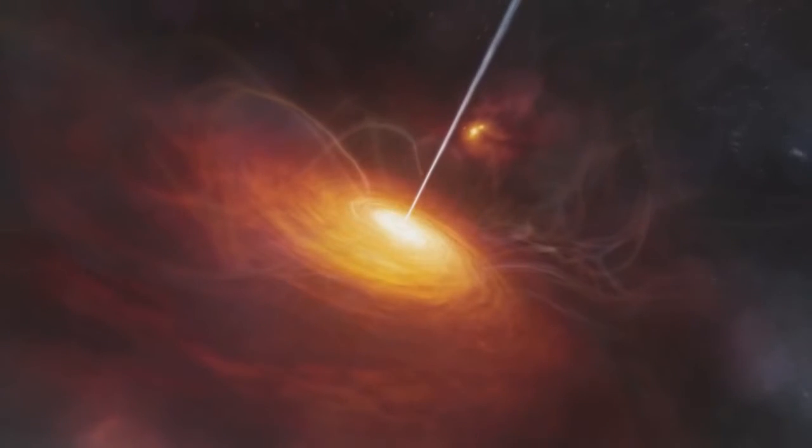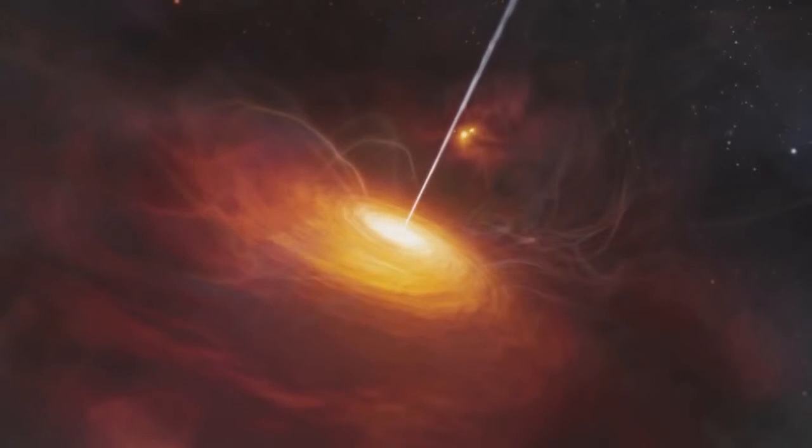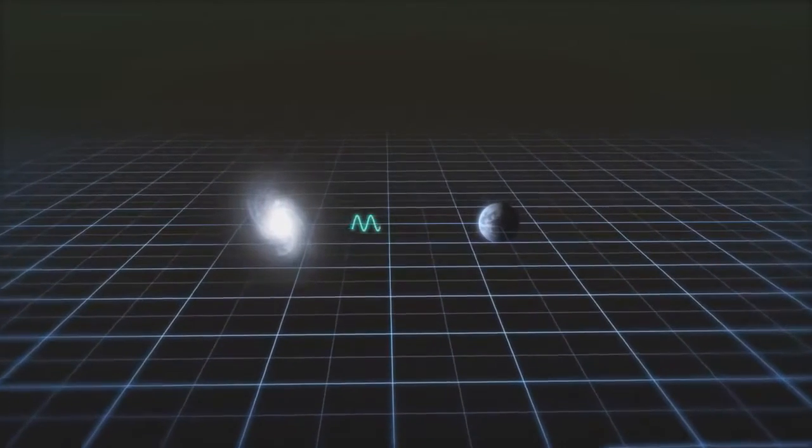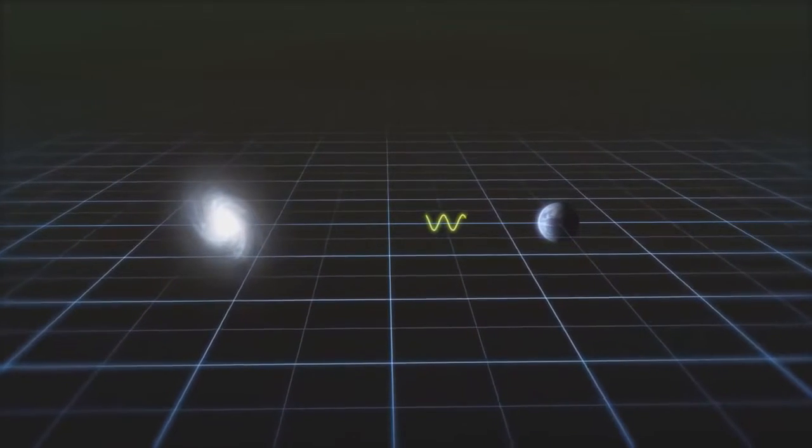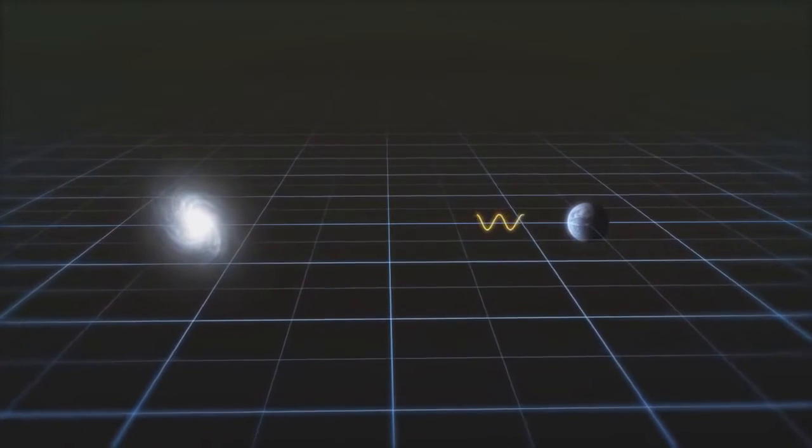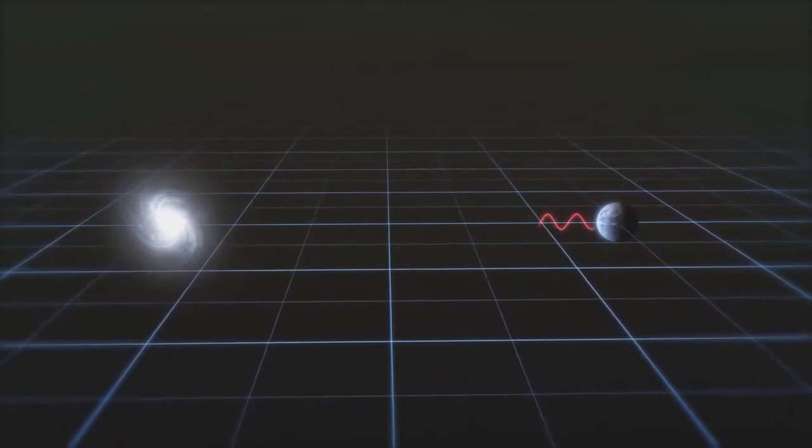Objects far back in the early Universe, like the newly recorded quasar, cannot be observed in visible light. By the time it reaches our detectors on Earth, the expansion of the Universe has stretched the light so much that it falls mainly into the infrared part of the spectrum.